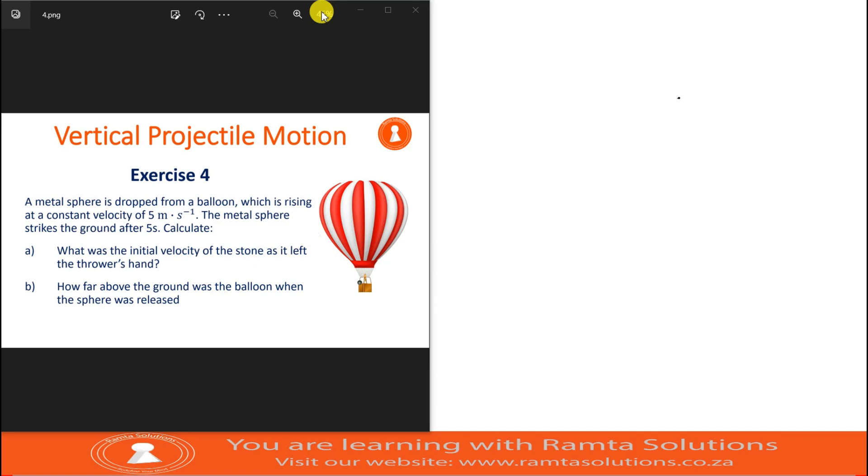Today we are looking at a case where a metal sphere is dropped from a balloon which is rising at a constant velocity of five meters per second. The metal sphere strikes the ground after five seconds. Calculate A, what was the initial velocity of the stone as it left the thrower's hand?